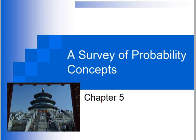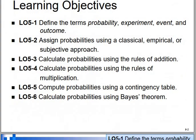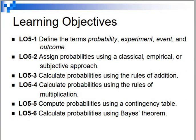Chapter 5, a survey of probability concepts. Today we will discuss probability. There are six learning objectives: we will learn the definition of probability, experiment, event, and outcome.